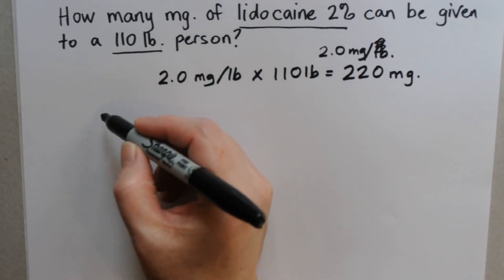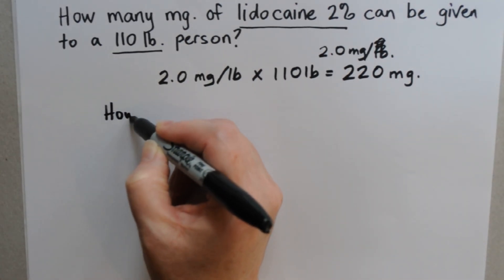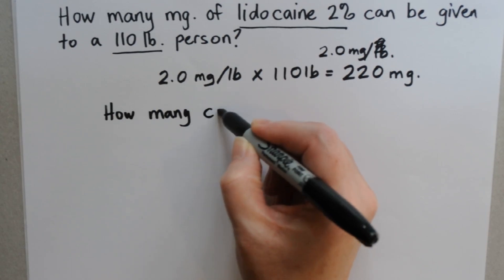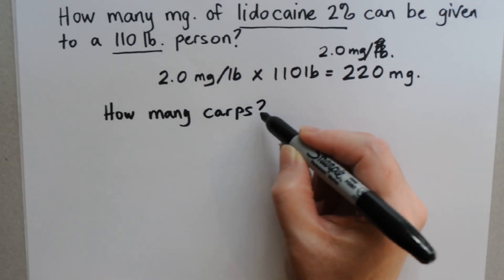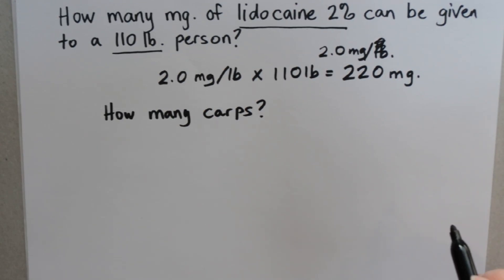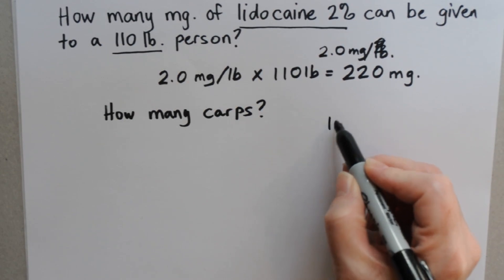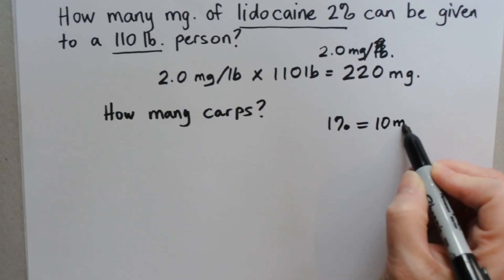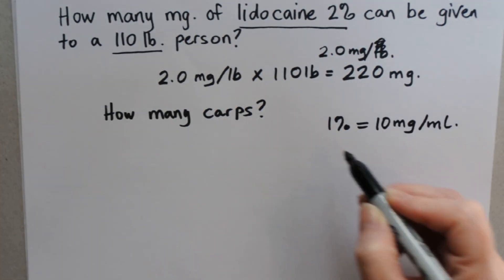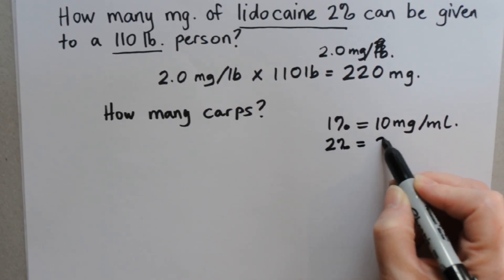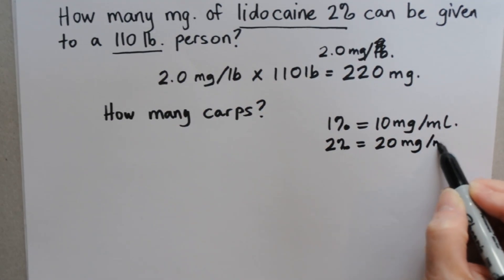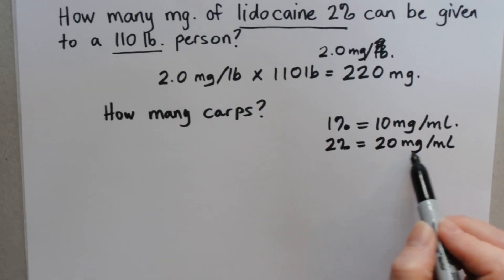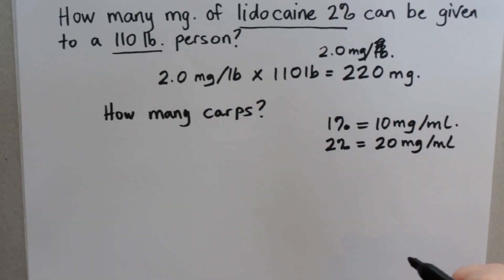Now let's add a new question: how many carpules can they have? Clinically it's not very useful to talk in milligrams, so let's talk about how many carps they can have. One pattern you can memorize is that for every 1% of solution, it's the same as 10 milligrams per milliliter. So if we have a 2% solution, that's 20 milligrams per milliliter.